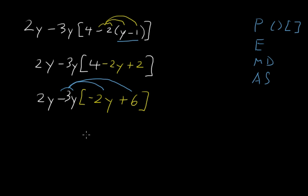What I have there is positive 6y squared. Negative 3 times negative 2 is positive 6. Then negative 3y times positive 6 gives us negative 18y.